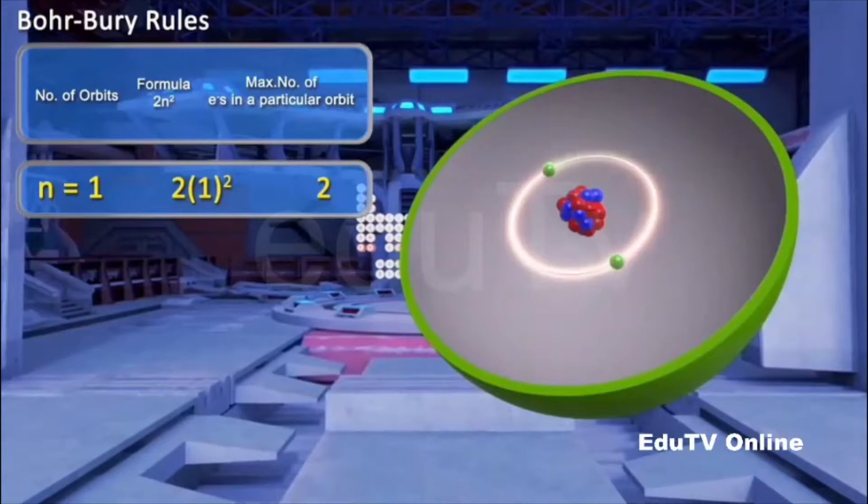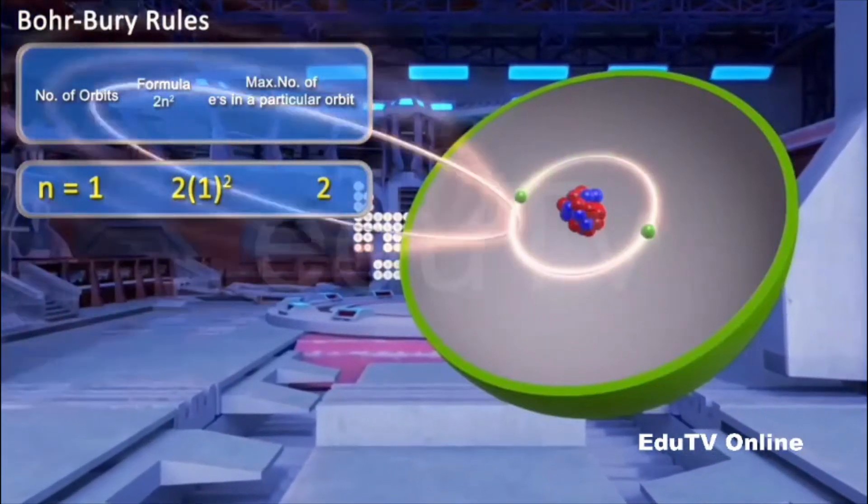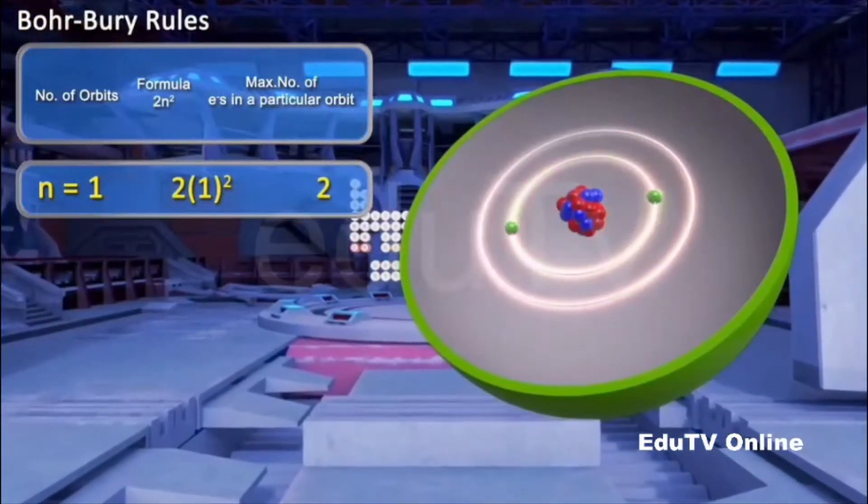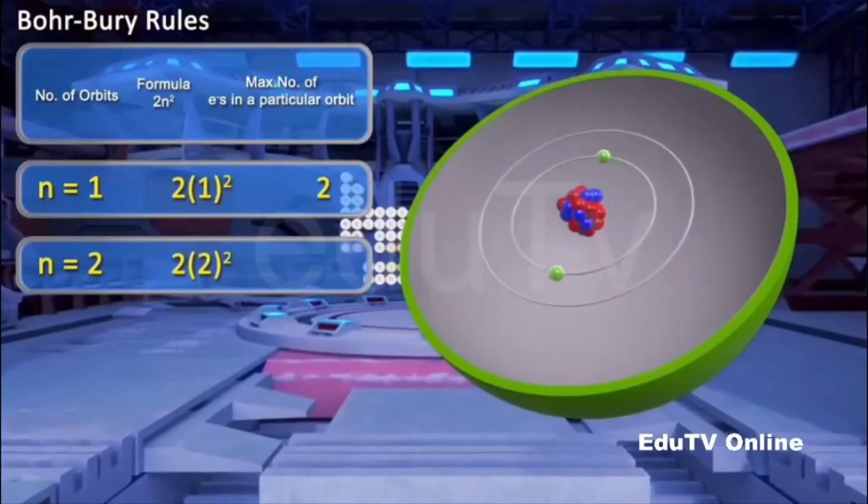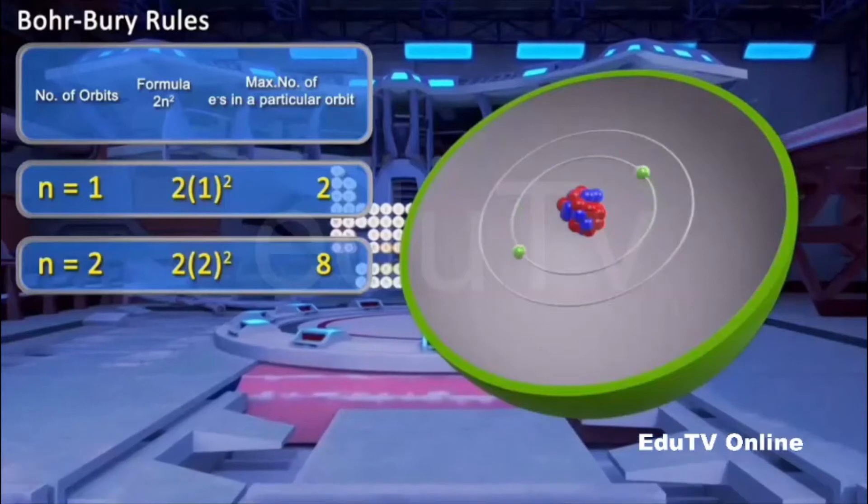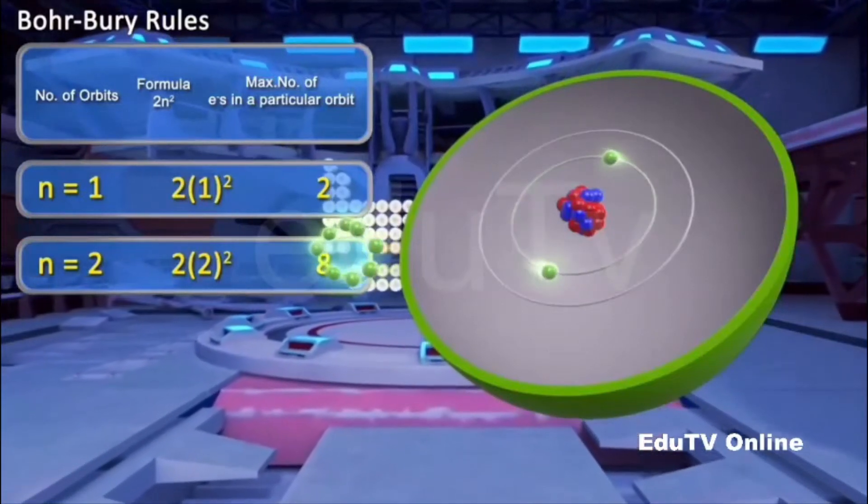For the second orbit, n is equal to 2, therefore 2n² equals 8. So the second orbit, or the shell L, can accommodate a maximum of 8 electrons.